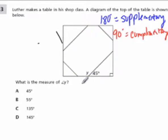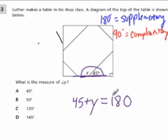Here, we can tell that this is going to be a supplementary pair because this is a straight line. And when you have a straight line, the angles that make up that straight line have to add up to 180 degrees. So this question is asking for what? It says, what is the measure of Y?